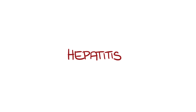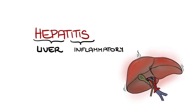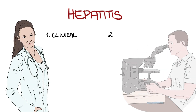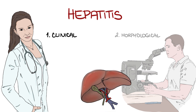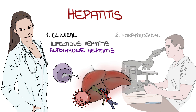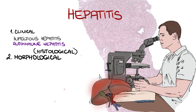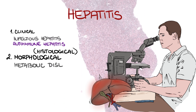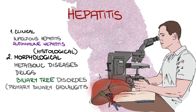The term hepatitis refers to an inflammatory condition of the liver. However, an exact definition of hepatitis differs from a clinical and morphological point of view. In clinical practice, this term is reserved for infectious hepatitis and autoimmune hepatitis. But many other diseases may show a histological picture of hepatitis, for example some metabolic diseases, drug-induced hepatopathies, or some disorders of the biliary tree, namely primary biliary cholangitis.